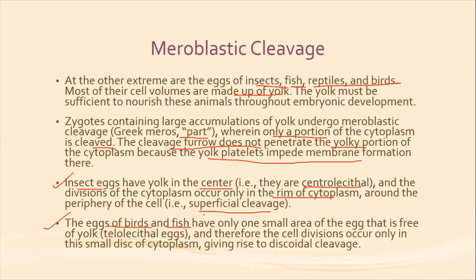In eggs of birds and fishes, only a small area of the egg is free of yolk. These eggs are known as telolecithal eggs — 'telo' means tip. Therefore, cell division occurs only in this small disc of cytoplasm, giving rise to the discoidal type of cleavage.